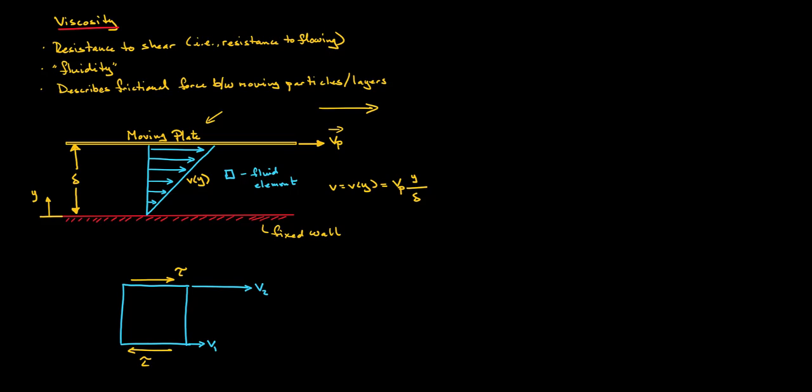Examining this motion, we find that the fluid in contact with the upper plate moves at the plate velocity V_p — that is, the velocity of the fluid at that point is the same as the plate velocity. Furthermore, the velocity of the fluid in contact with the fixed wall, which is not moving, equals the velocity of the wall, which is zero. The observation that fluid particles at solid surfaces move with those surfaces — that is, the fluid sticks to the surface — is known as the no-slip condition.